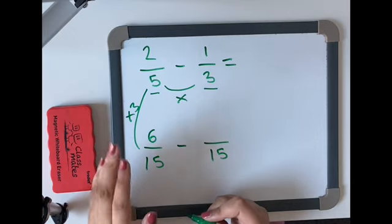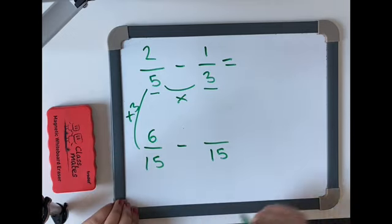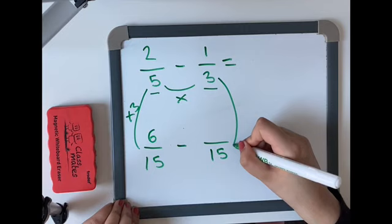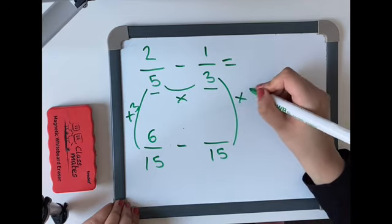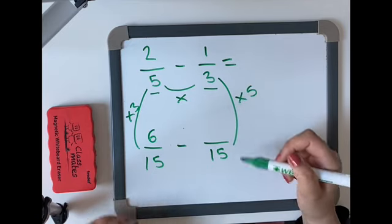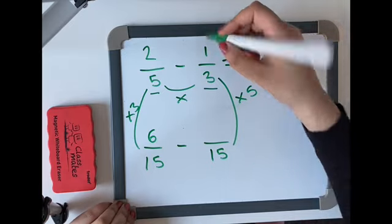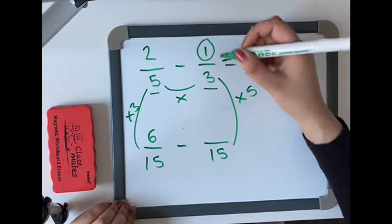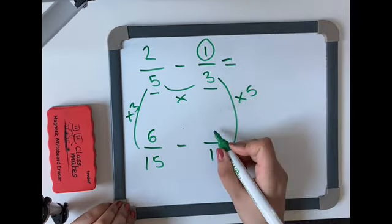Now we looked at this side, we must now do the other side. How do I get from 3 to 15? I multiply it by 5. So what I must do to the bottom, I must do to the top. We look at our numerator once again. It's 1. 1 times 5 equals 5.